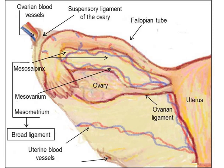The fallopian tubes are part of the female reproductive system. In other mammals they are only called oviducts. Each tube is a muscular hollow organ that is on average between 10 and 14 cm in length, with an external diameter of 1 cm.